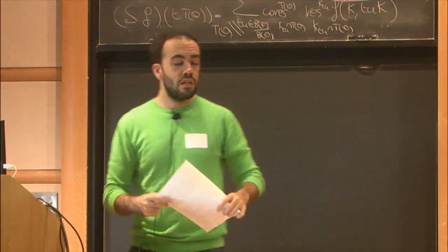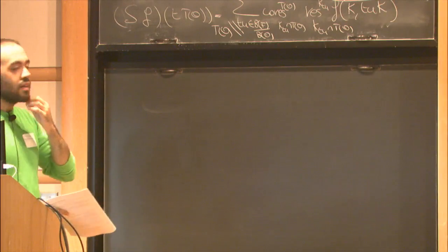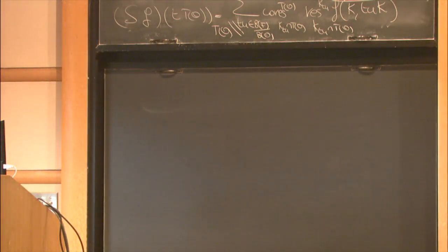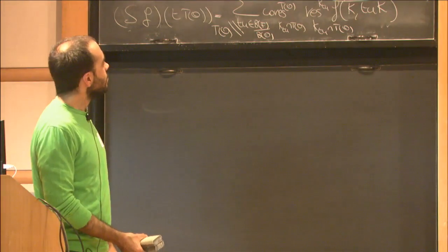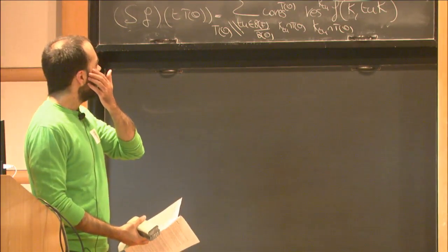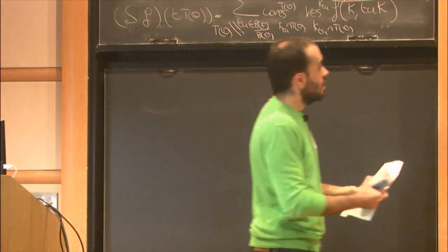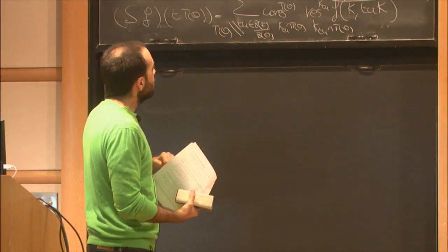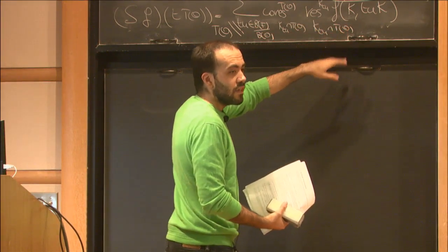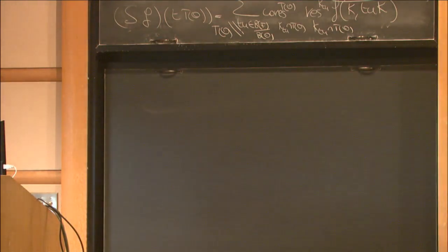Audience: It depends on the choice of Borel? Reply: Yes, I'm considering a choice of Borel fixed from the beginning. Audience: Can you describe what happens if you take another Borel? Reply: I haven't thought about that. Audience: In the previous definition, you had an implicit argument that the sum is finite because of the orbits? Reply: Yes, and that works here too. You need a separate argument to show this is indeed well-defined as a finite sum. I'm skipping many details. Even proving that this is an algebra map requires a whole different argument.